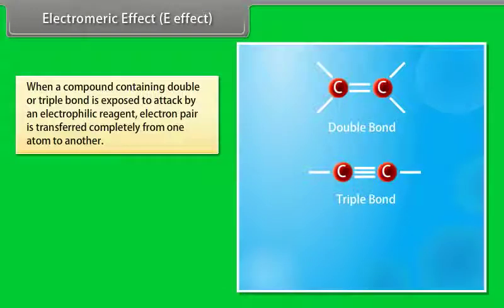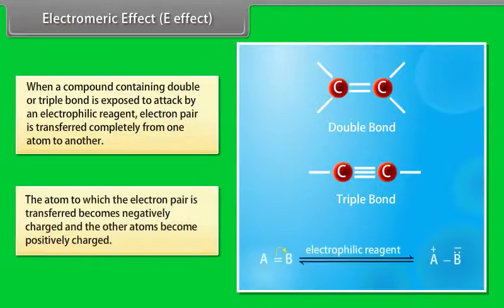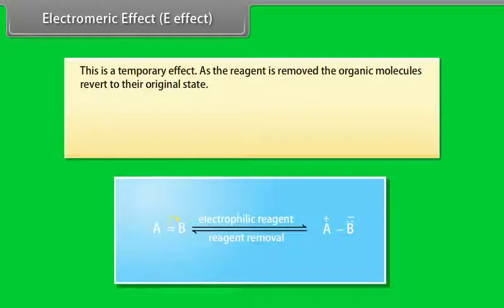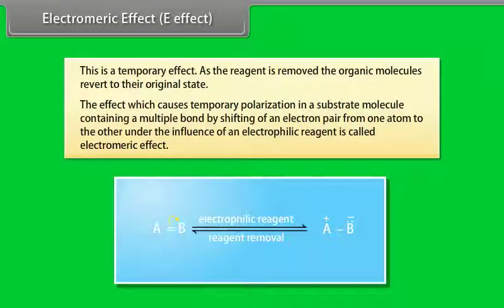Electromeric effect (E effect): when a compound containing a double or triple bond is exposed to attack by an electrophilic reagent, the electron pair is transferred completely from one atom to another. The atom to which the electron pair is transferred becomes negatively charged and the other becomes positively charged. This is a temporary effect; as the reagent is removed, the organic molecule reverts to its original state.